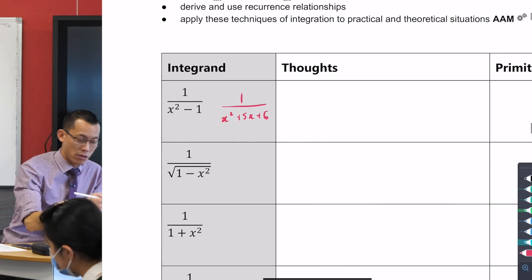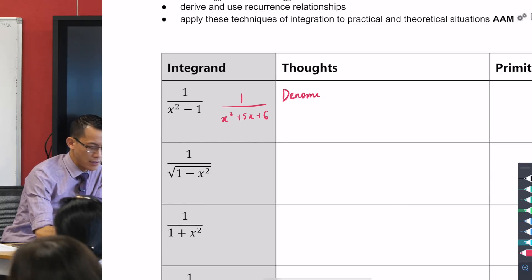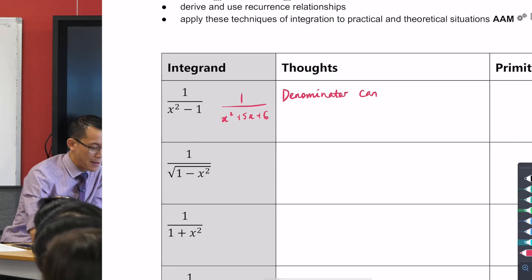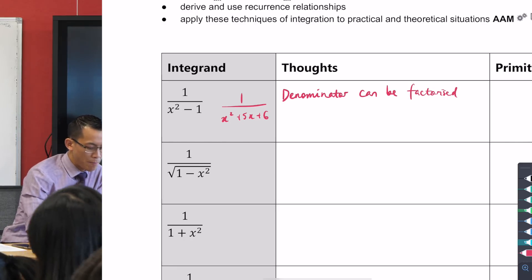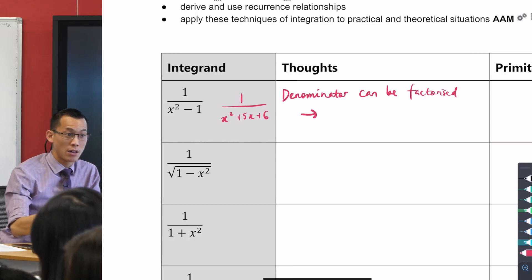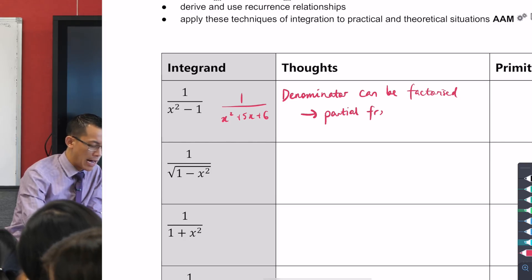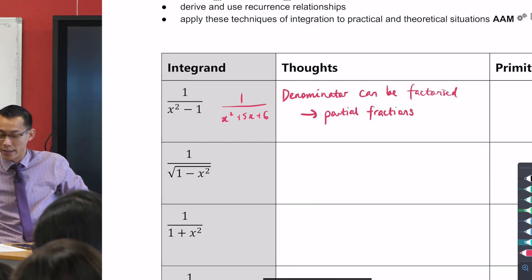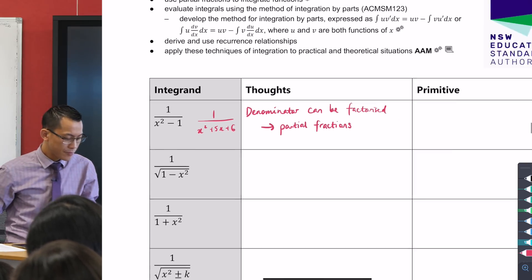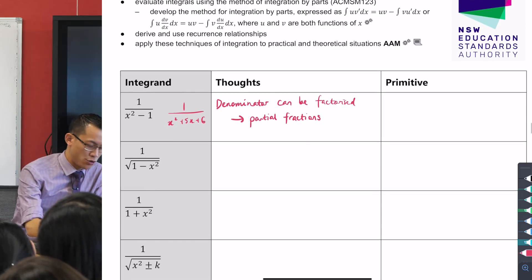And then once you factorize it, what can you do? We can do partial fractions, just like we did before. So, my thought here is, if it's a denominator that can be factorized, if the denominator is quadratic but it can be factorized, then we're pretty much good to go in terms of using partial fractions.